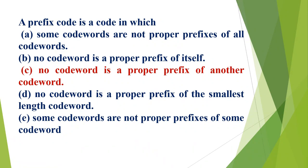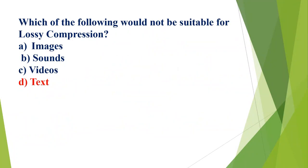A prefix code is a code in which: A) some codewords are not proper prefixes of all codewords, B) no codeword is a proper prefix of itself, C) no codeword is a proper prefix of another codeword, D) no codeword is a proper prefix of the smallest length codeword, E) some codewords are not proper prefixes of some codewords. The correct option is C, no codeword is a proper prefix of another codeword.